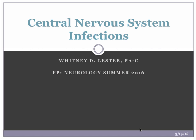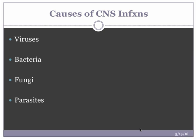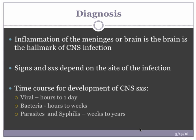Our last lecture is on the central nervous system. We're going to look at viruses, bacteria, fungi, and parasites. Inflammation of the meninges or brain is the hallmark of CNS infection. Like tumors, the size and symptoms depend on the site of the infection, not on the organism — so it's where in the brain this occurs, not what is in the brain.